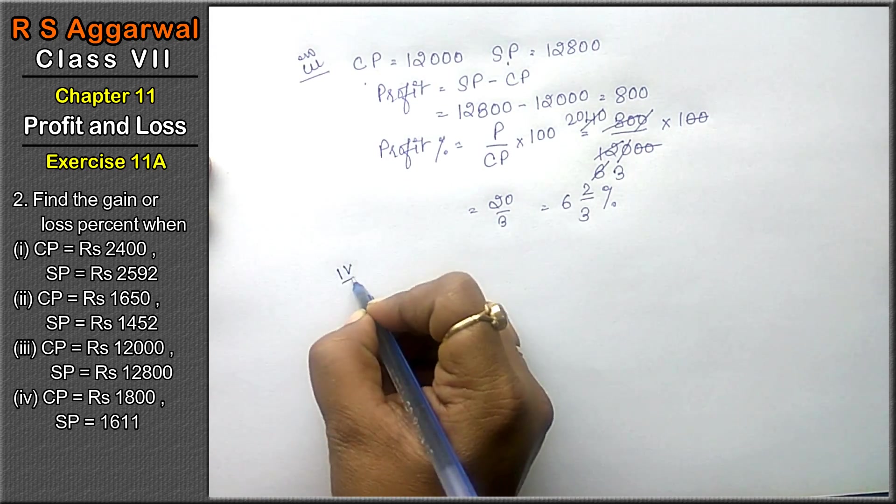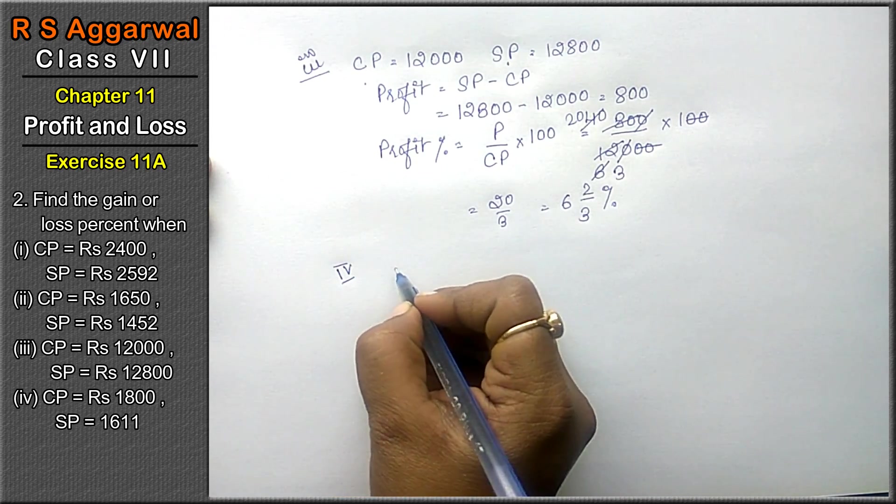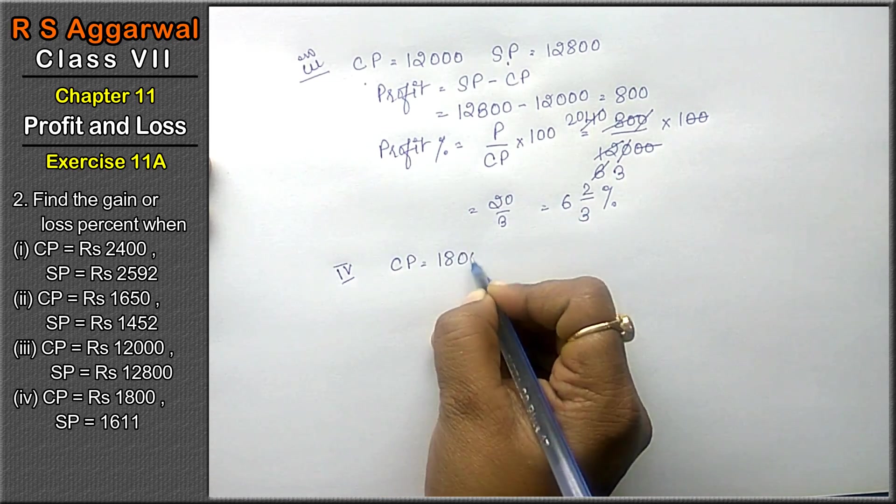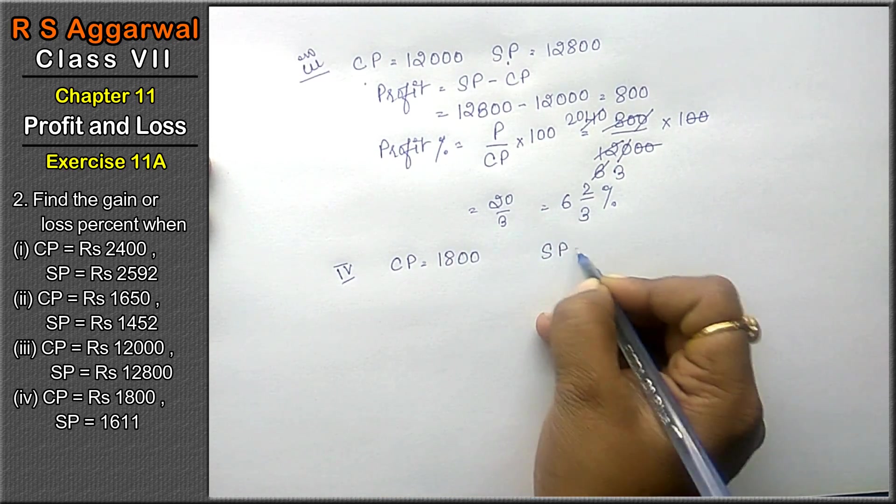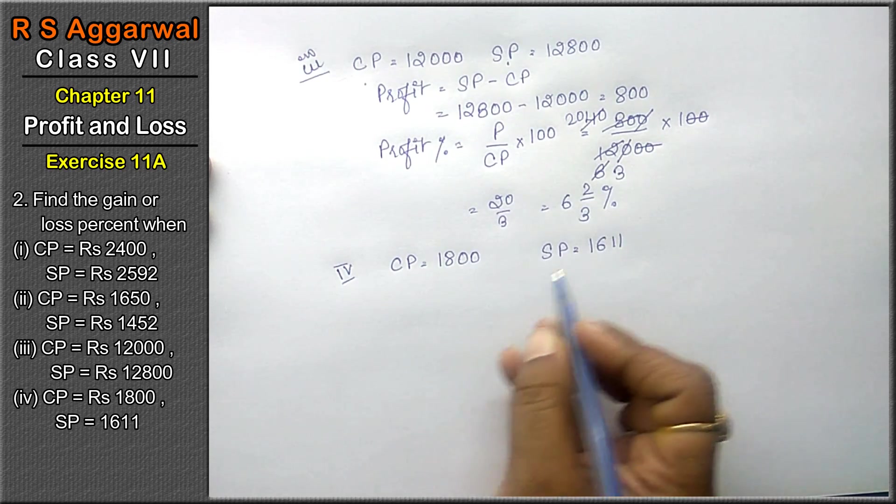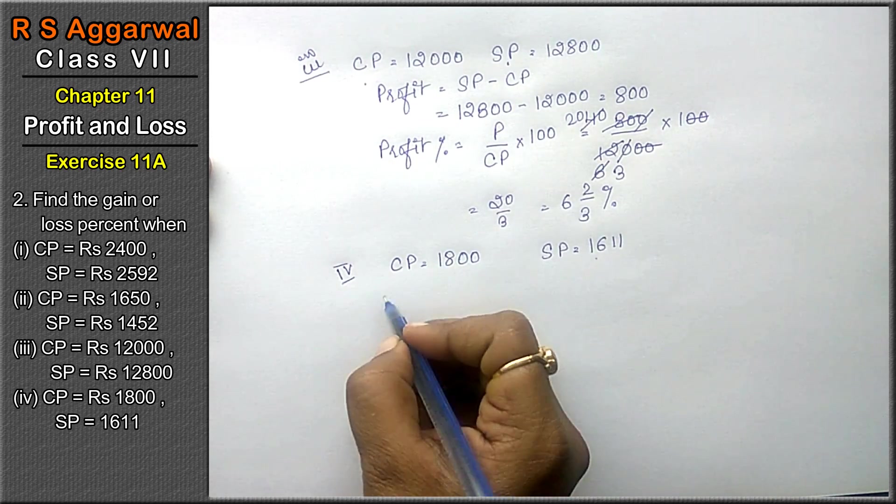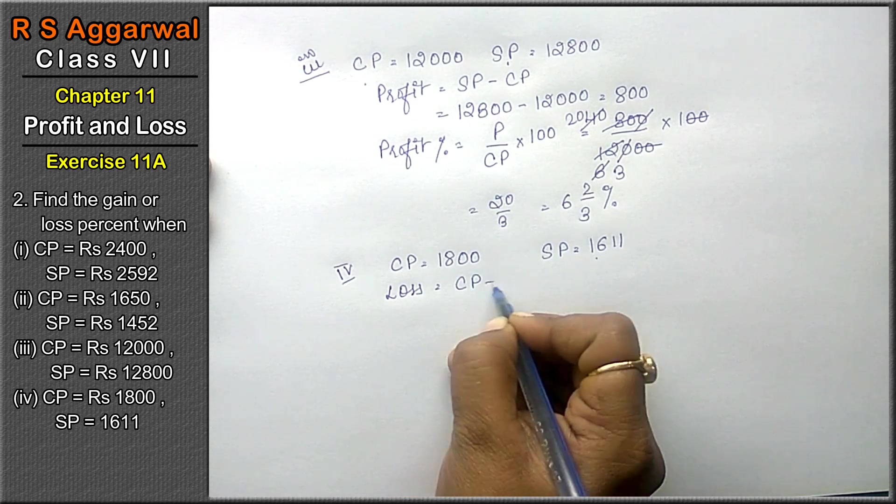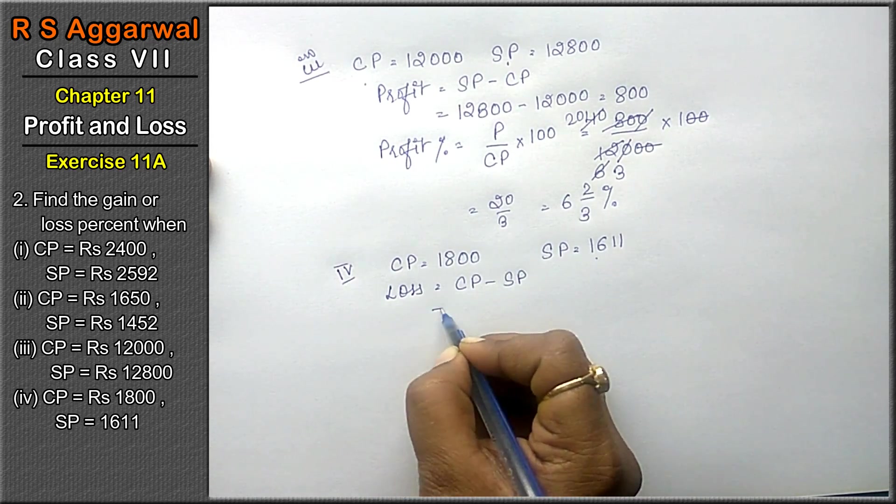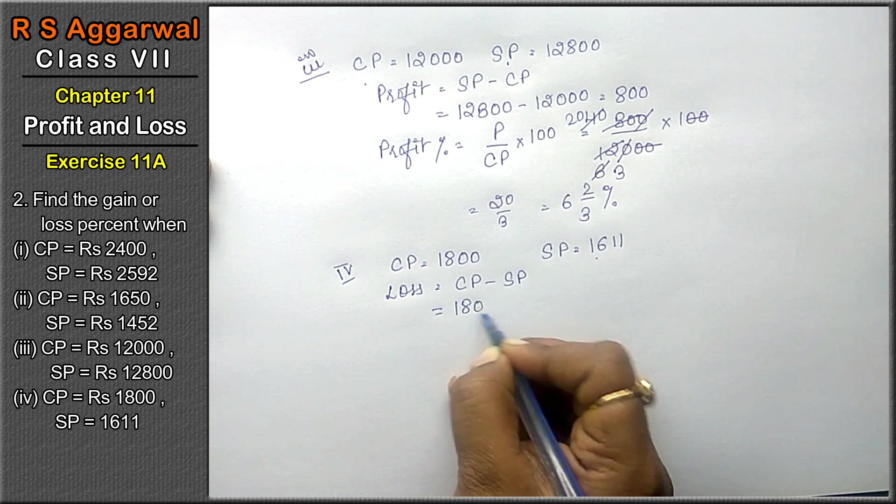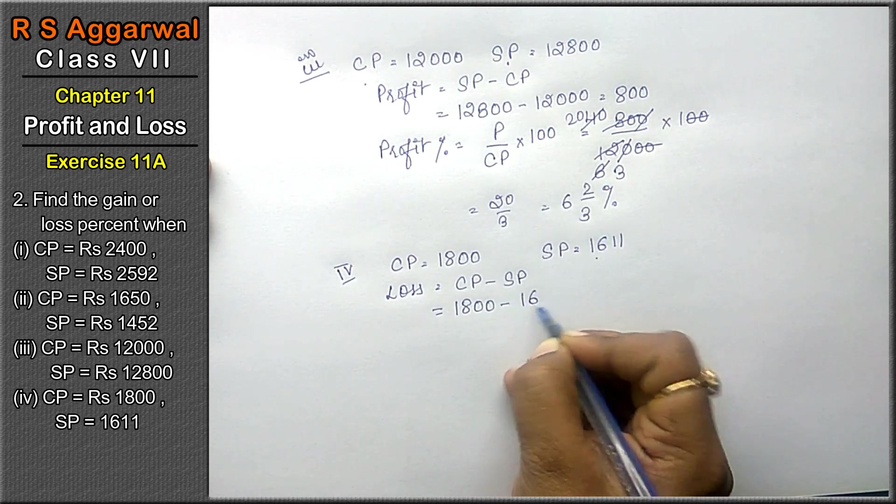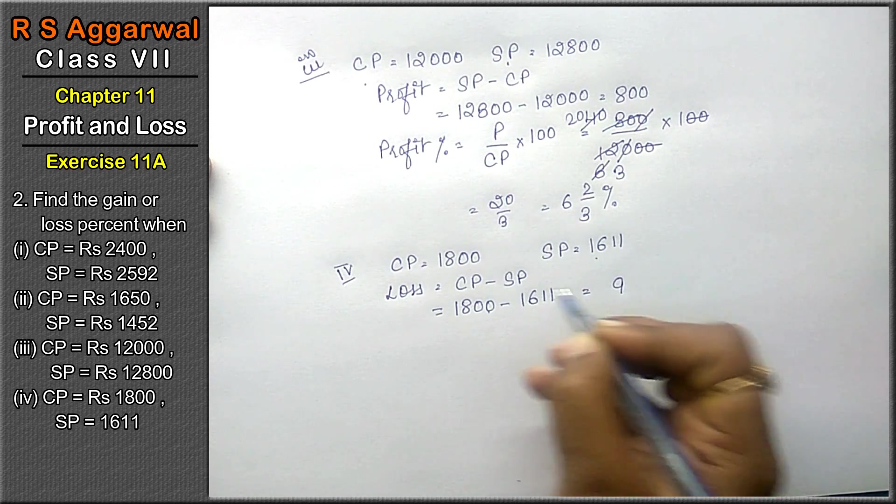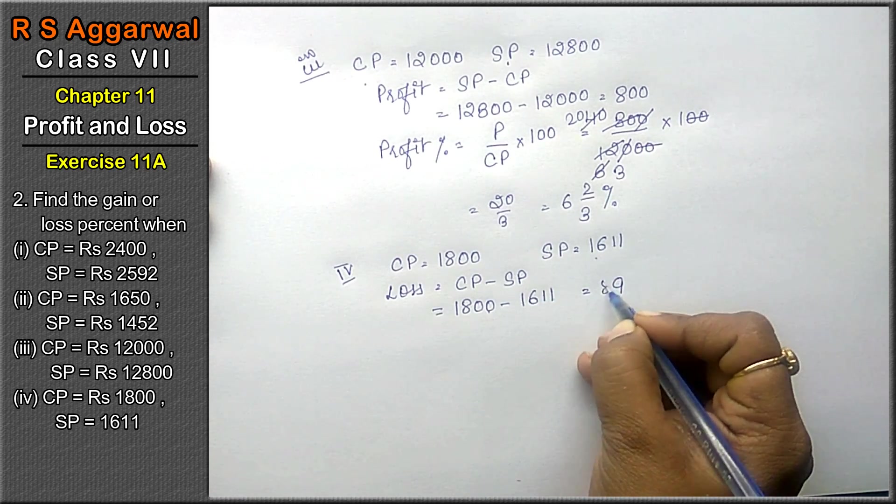Let's do fourth part. CP equals to 1800 and SP equals to 1611. Now SP is less than CP, then we are getting loss. Loss formula is CP minus SP. CP is 1800 and SP is 1611, so loss is 189.